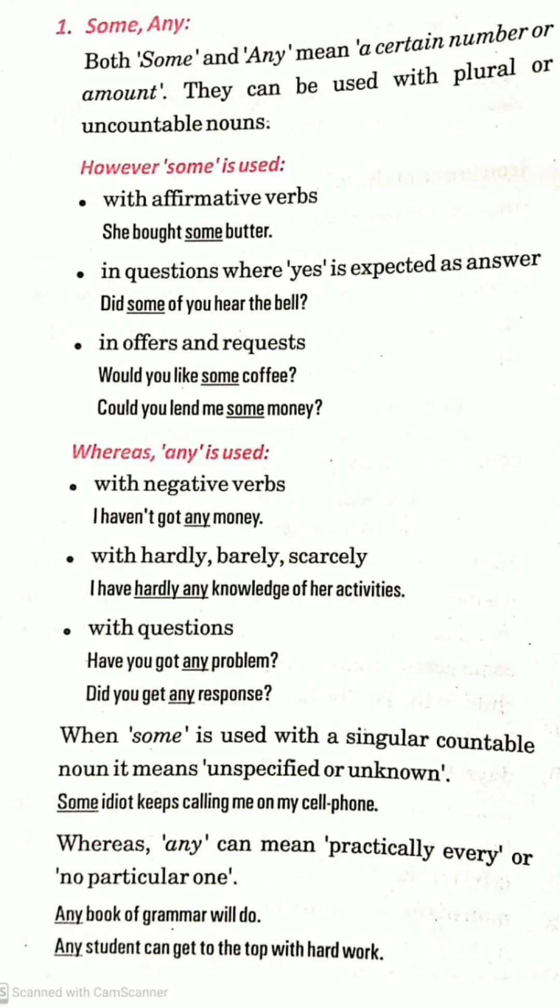The first ones are 'some' and 'any.' Both some and any mean a certain number or amount. They can be used with plural or uncountable nouns. Uncountable nouns are those which we cannot count.